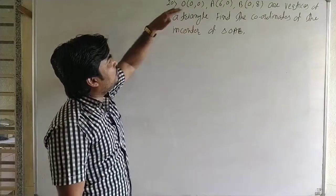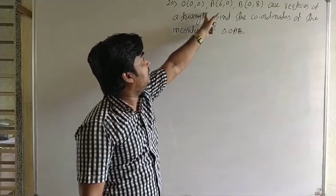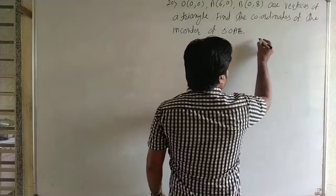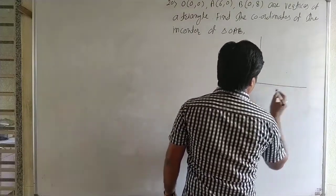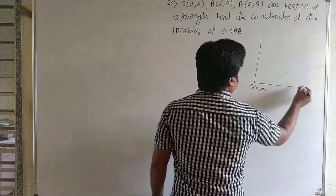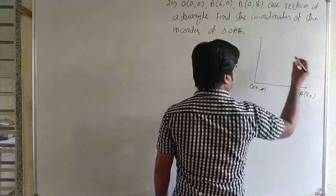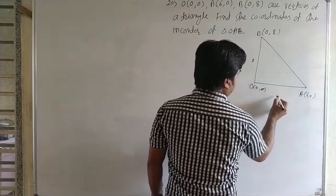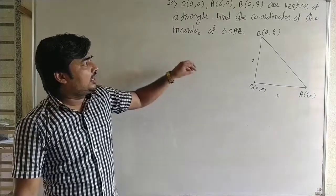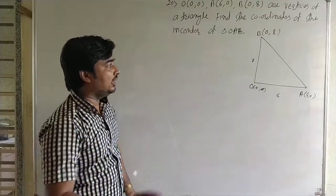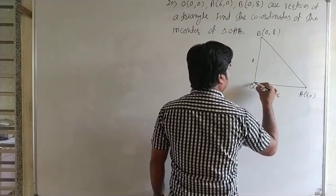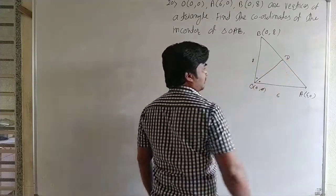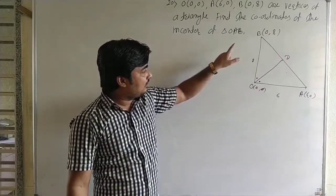We take two angle bisectors. Let OD be the angle bisector from O, and BE be the angle bisector from B. Their point of intersection E is the incenter of the triangle. First, we find the length of all sides: OA = 6, OB = 8, and AB = √((0−6)² + (8−0)²) = √(36+64) = 10. For angle bisector OD: D divides AB internally in the ratio OA:OB = 6:8 = 3:4.